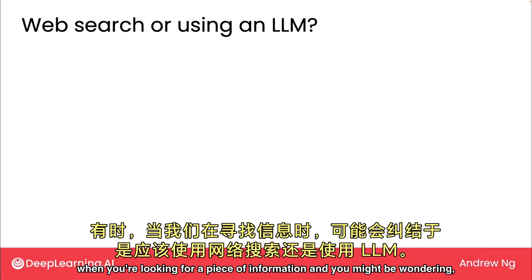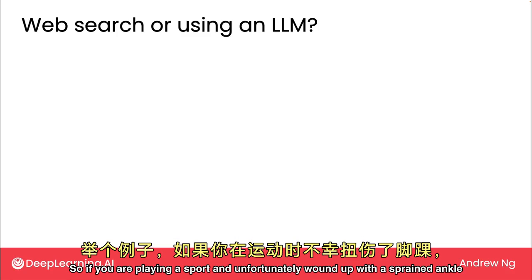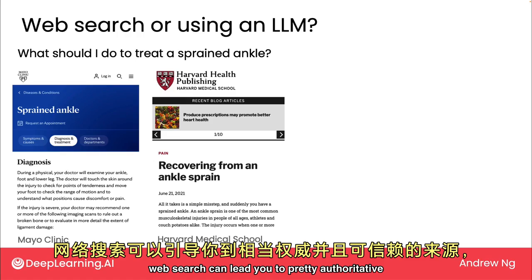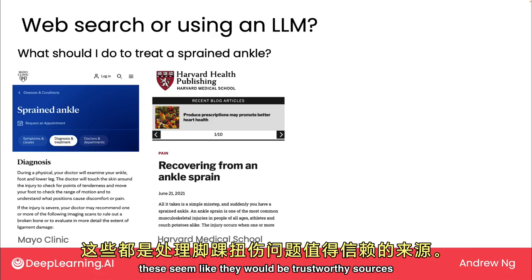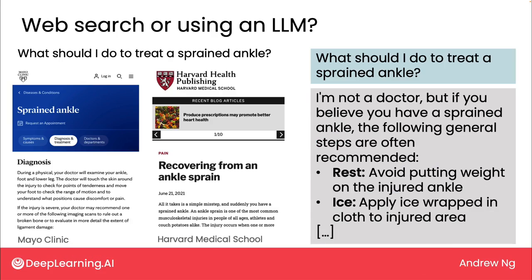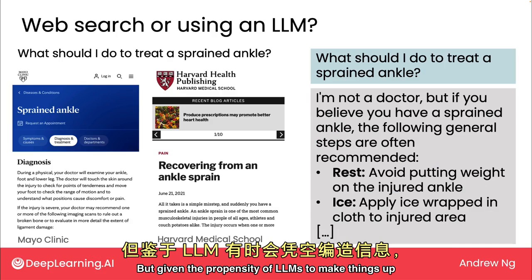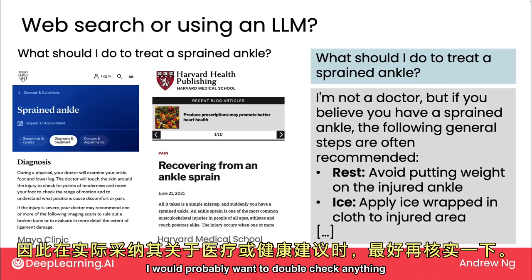There will be times when you're wondering: should I use web search or an LLM? For example, if you're playing a sport and wind up with a sprained ankle and want to know what to do, web search can lead you to pretty authoritative and trustworthy sources — like web pages from the Mayo Clinic or Harvard — that give advice on medical matters. You could also ask an LLM, and it will generate some answer. But given the propensity of LLMs to make things up and sometimes sound very authoritative while doing so, I would probably want to double check anything it says about healthcare or medicine before following the suggestions.